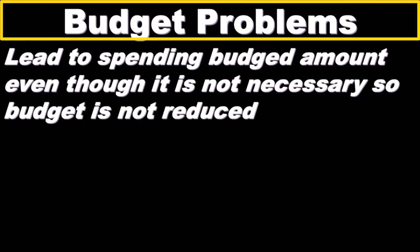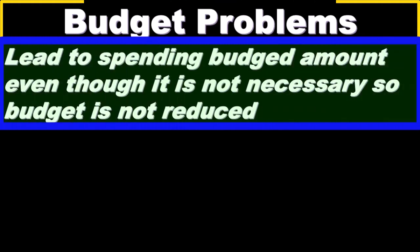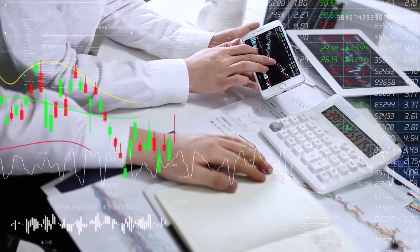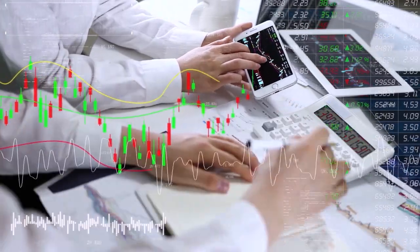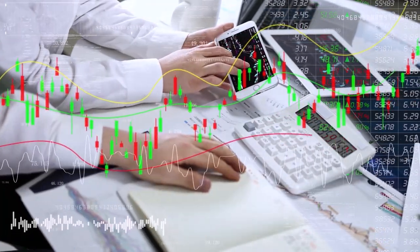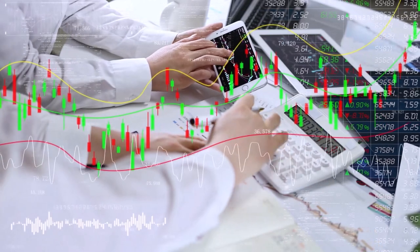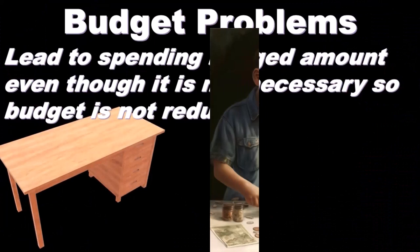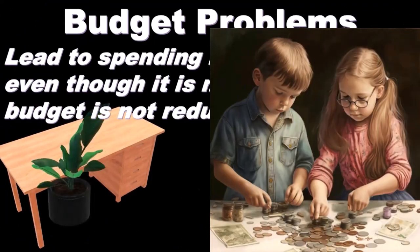Another problem inherent in the budget is that it could lead to spending an amount equal to the expenses allocated to a department. If a department is allocated a certain expense budget, there's an incentive to spend everything allocated, because if they don't, they likely won't receive that much in the future. This leads to unnecessary spending — things like extra planters or chairs — and it often happens at the end of the budget period.